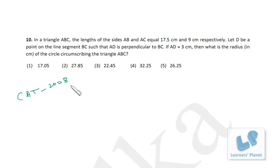Now this problem is from CAT 2008 based on geometry. In a triangle ABC, the lengths of sides AB and AC equal 17.5 cm and 9 cm respectively. Let D be a point on the line segment BC such that AD is perpendicular to BC. If AD is equal to 3 cm, then what is the radius of the circle circumscribing the triangle ABC?